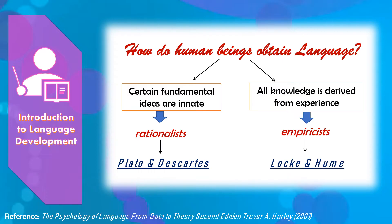Among the most influential work of the empiricists was that of Locke. Locke argued that all knowledge held by the rationalist to be innate could be acquired through experience. According to Locke, the mind at birth is tabula rasa — a blank sheet of paper — upon which sensations write and determine future behavior.